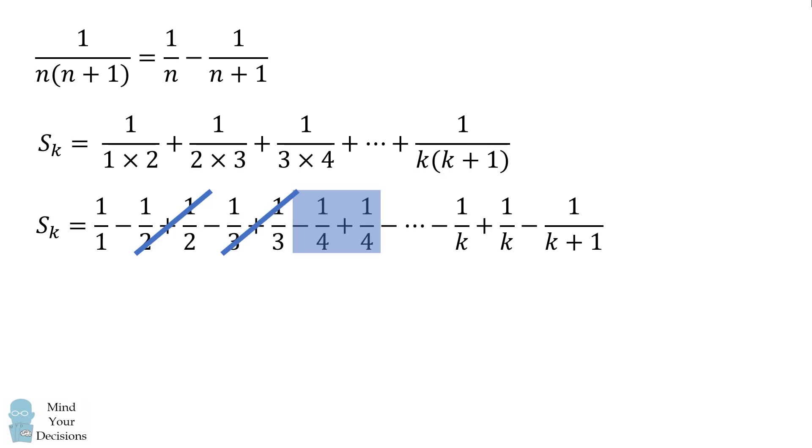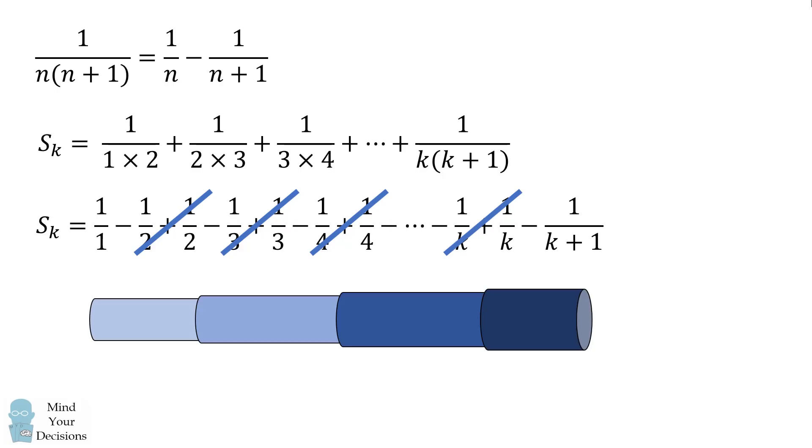This pattern continues. We have negative 1 fourth and plus 1 fourth, and that'll also continue. And we go all the way where all of these middle terms keep canceling out.